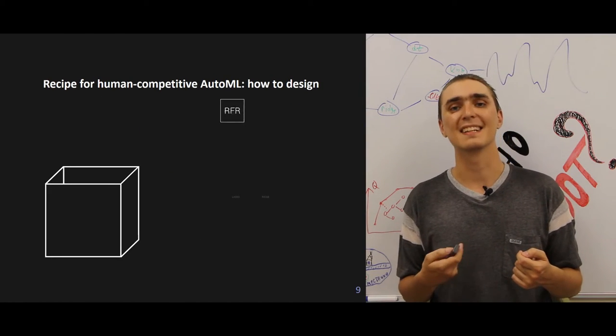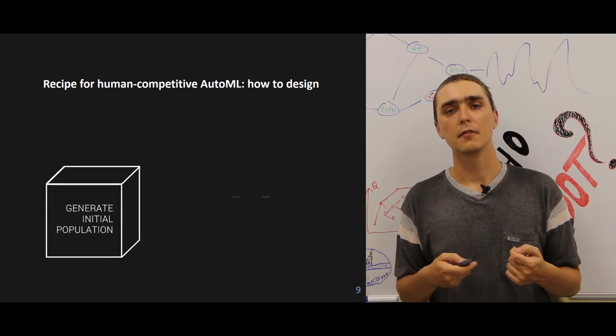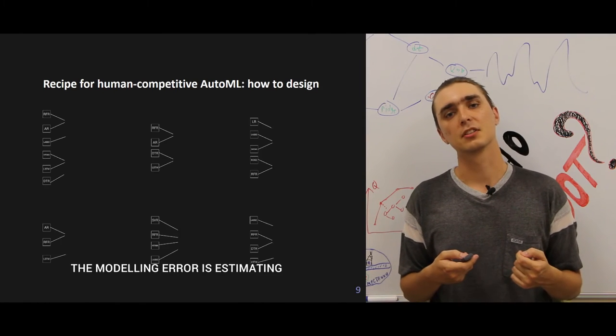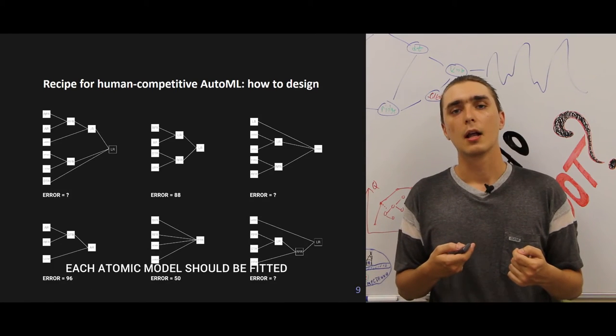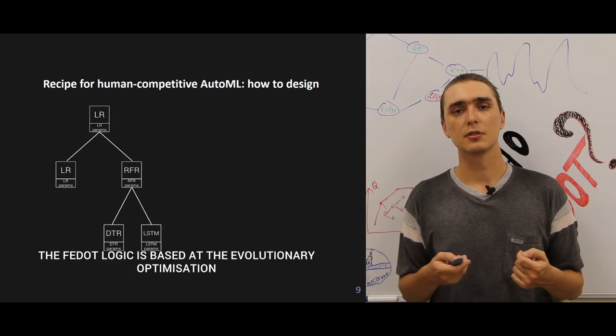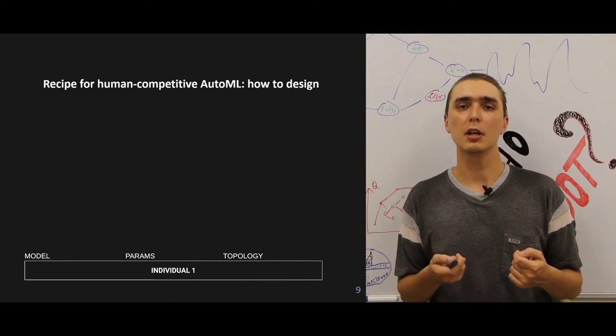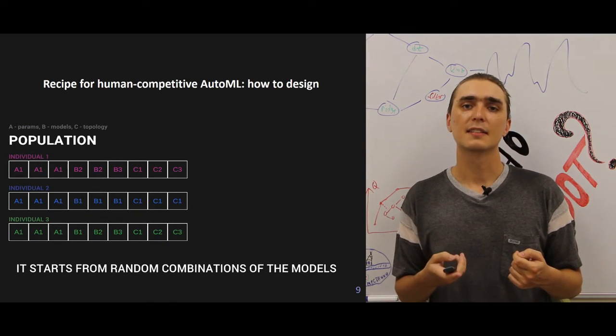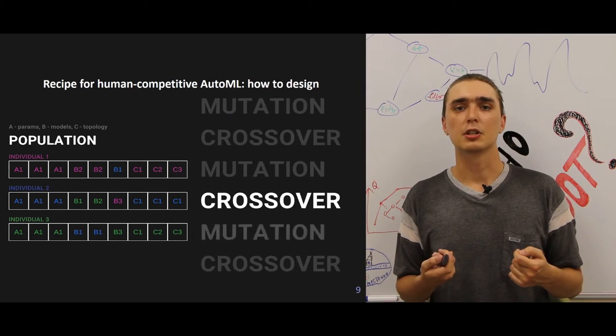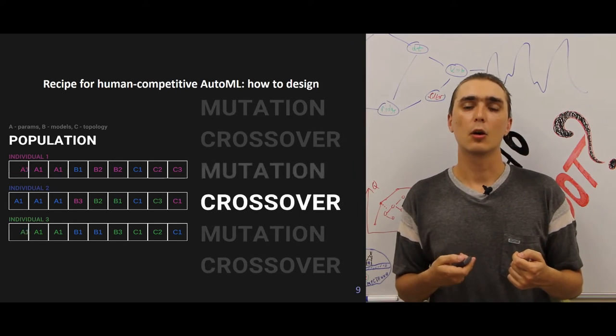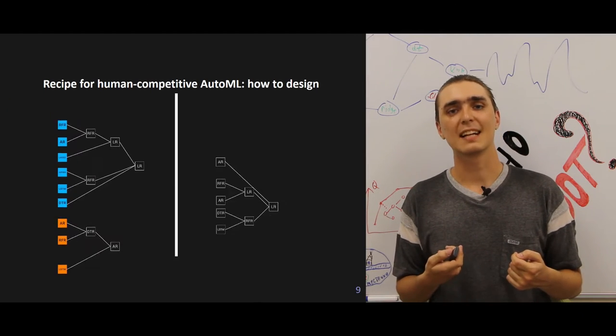The problem is to automate the design of composite pipelines. We use the genetic programming technique to evolve the solutions. We start from an initial population. Then we apply crossover and mutation operators that allow us to modify the structure of directed acyclic graphs.